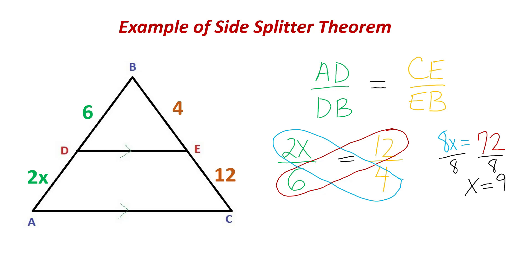To know that they're proportional, they have to have the same ratio. So on my one side, I have 4 over 12. And if I simplify that, I'm going to get 1 third. So on the other side, I have 6 over 2X. And my X is equal to 9. So that would be 18.